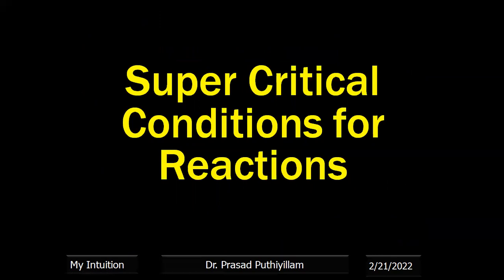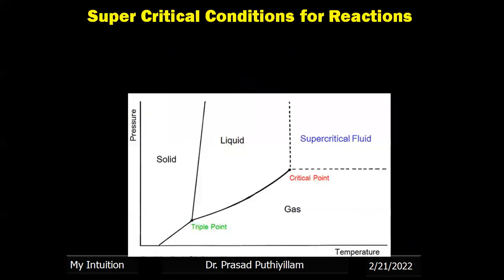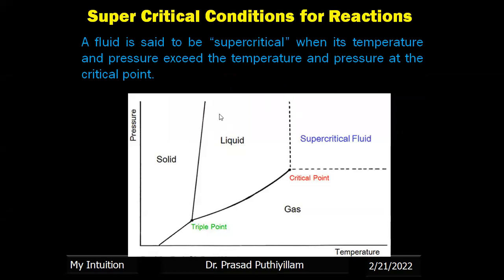Now, supercritical conditions of reaction — mainly we use supercritical carbon dioxide as a reaction condition in green chemistry. A fluid is said to be supercritical when its temperature and pressure exceed those at the critical point. Solids, upon increasing pressure or temperature, convert into liquid and then gaseous phases. There exists a triple point where the material exhibits solid, liquid, and gaseous behavior simultaneously. Further at high temperature and pressure, it converts into a supercritical fluid, which exhibits neither purely liquid nor purely gaseous behavior.